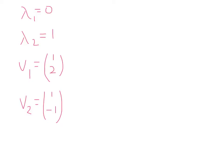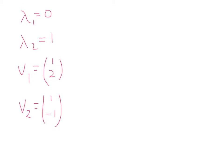Hello everyone. In this short video, I would like to go through an example of drawing the phase portrait in the following case: you have two eigenvalues, they are real and they are distinct, and one of them is zero. So we see that lambda 1 is zero and lambda 2 is positive — let's say it's one. We put in some eigenvectors, and we would like to draw the phase portrait. So let's draw our axes.